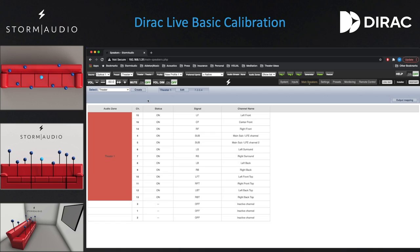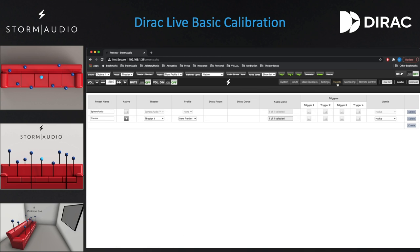Lastly, we need to allocate the calibrated profile to the preset used for the theater. Click on the Presets landing page of the web user interface. Select the desired preset containing the theater or zone you just calibrated and pick the new profile from the profile dropdown.